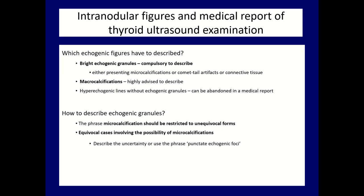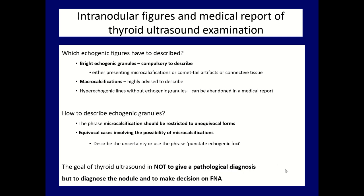The forms of connective tissue can be omitted from the medical report. It is very important how to describe an echogenic granule. I fully agree with the approach of the European TIRADS, which states that we can describe 'microcalcification' in our medical report only in absolutely unequivocal cases. In uncertain cases, we should present our doubt or uncertainty, and can use the phrase 'punctate echogenic foci' or 'hyperechoic granule', but should not state we see microcalcifications if we are not fully sure.